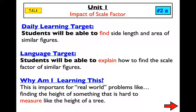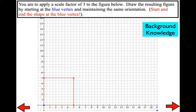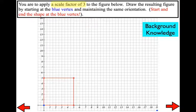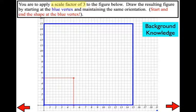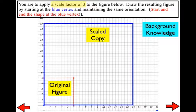One reason you're learning this is finding the height of something hard to measure, like the height of a tree. Yesterday we talked about scale factor and scaled copies. We ended with an original figure — a red square that is 5 by 5 — and then we applied a scale factor of three. Since the scale factor is larger than one, we get a larger figure: 3 times 5 is 15, so the blue scaled copy is 15 by 15.